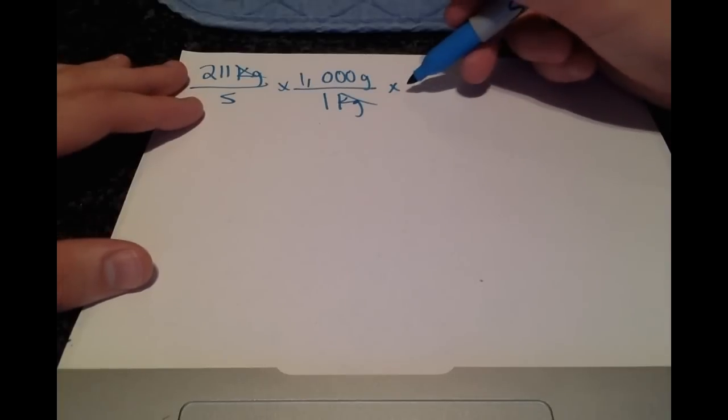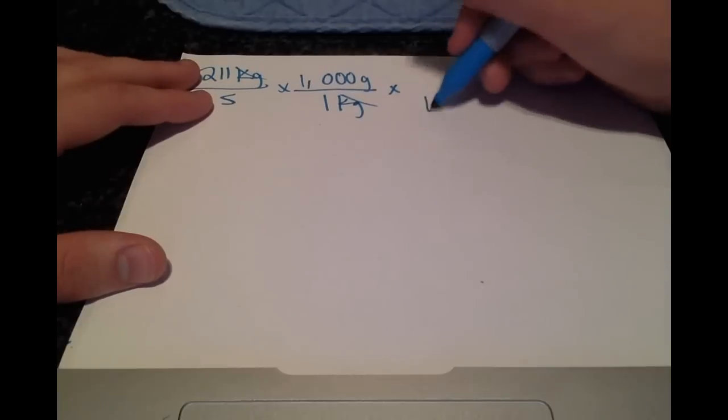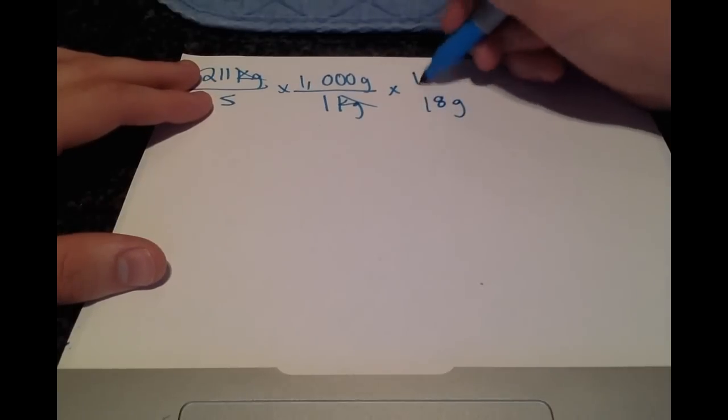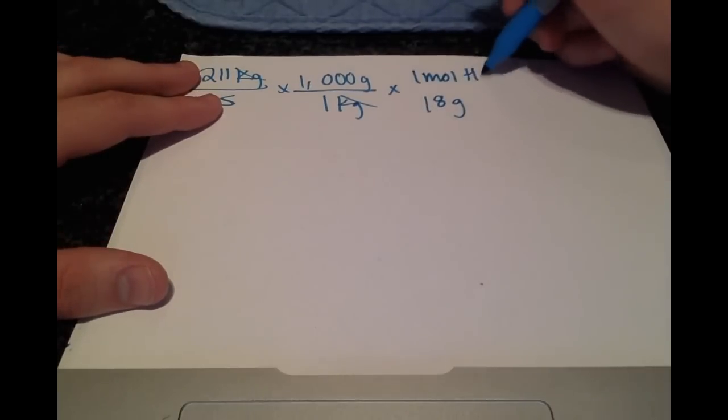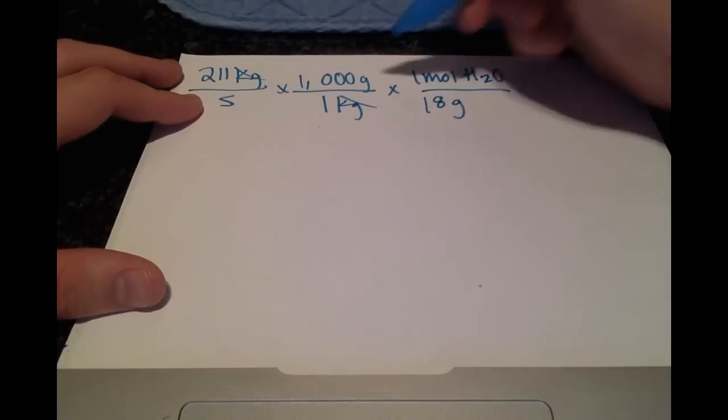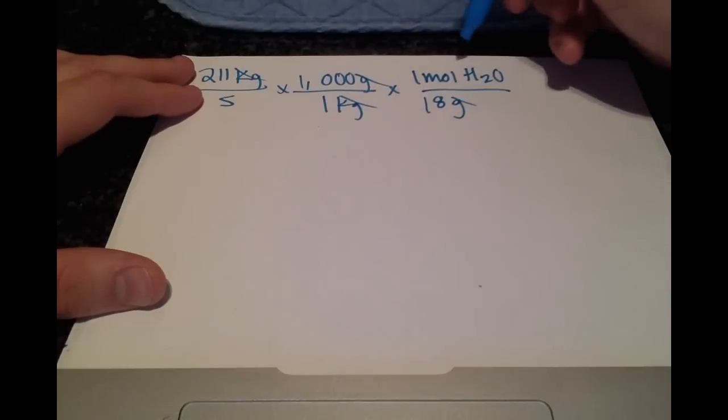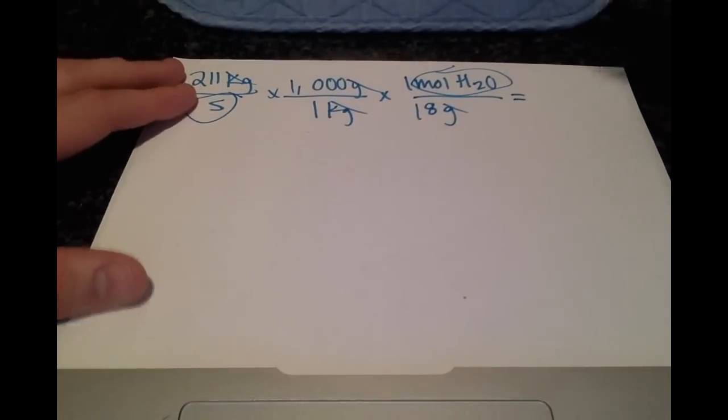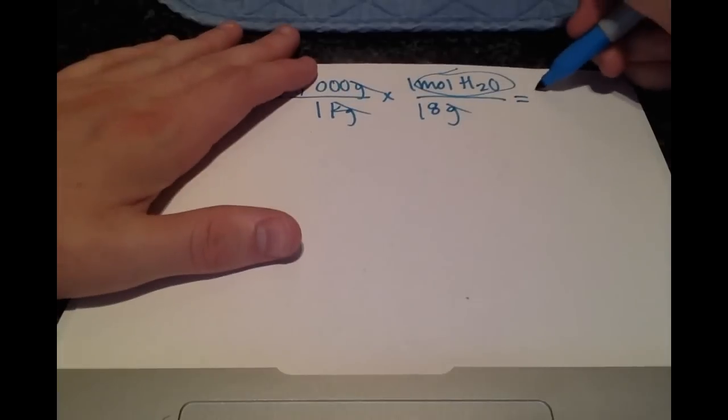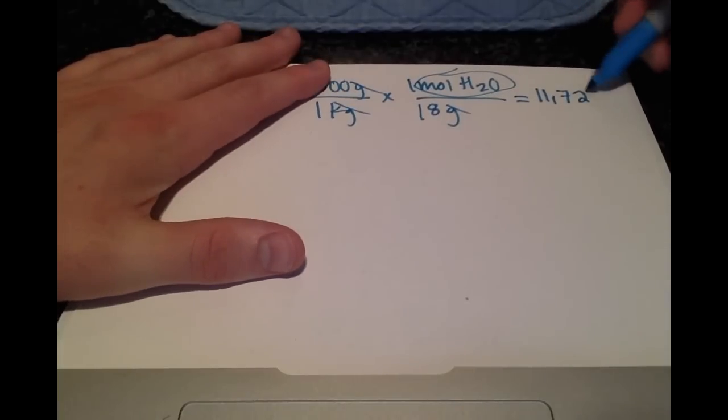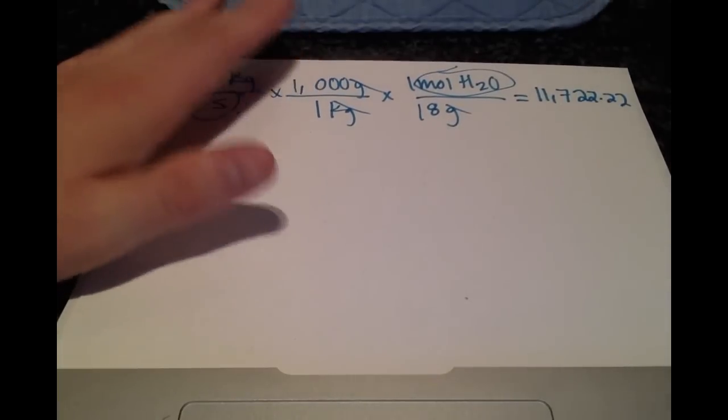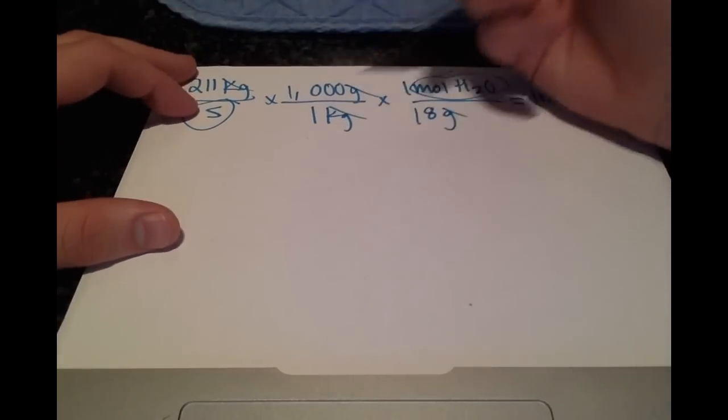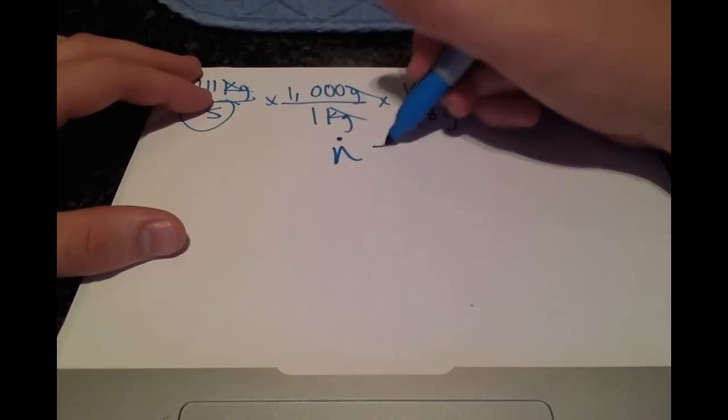So in canceling our units, we'll get the moles of H2O over seconds to be 11,722.22 repeating, and using our notation, the molar flow rate.